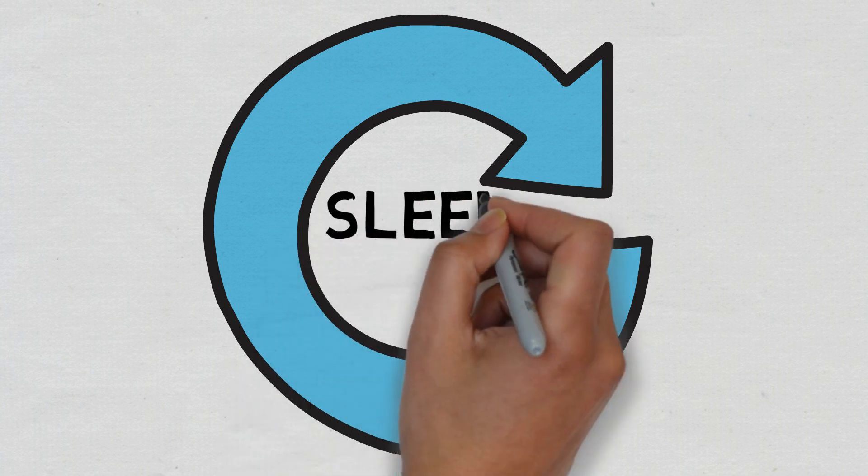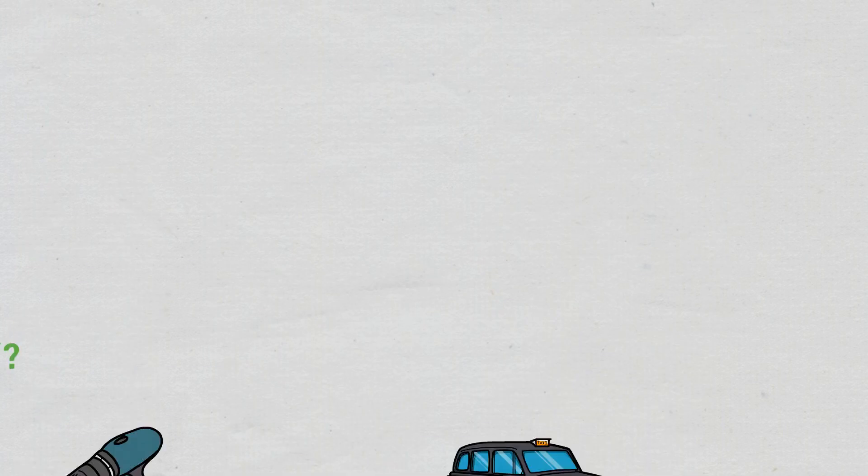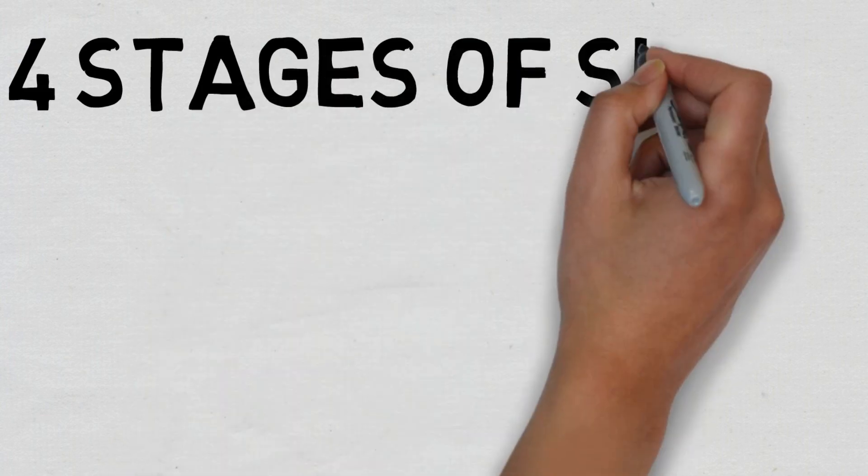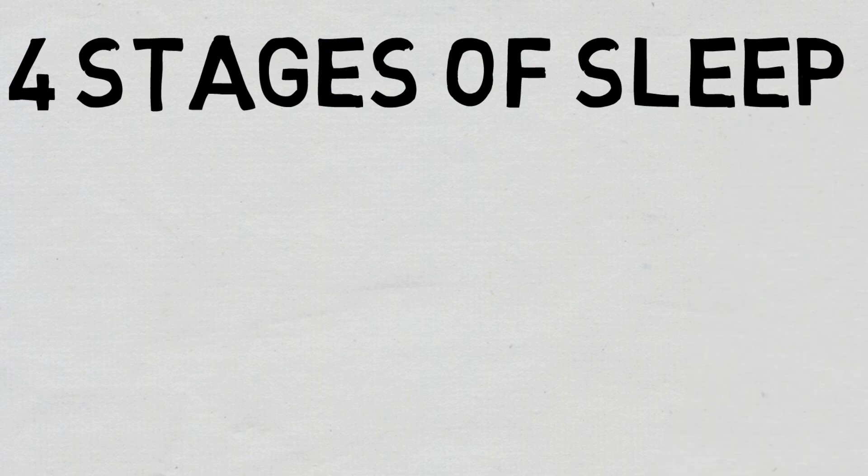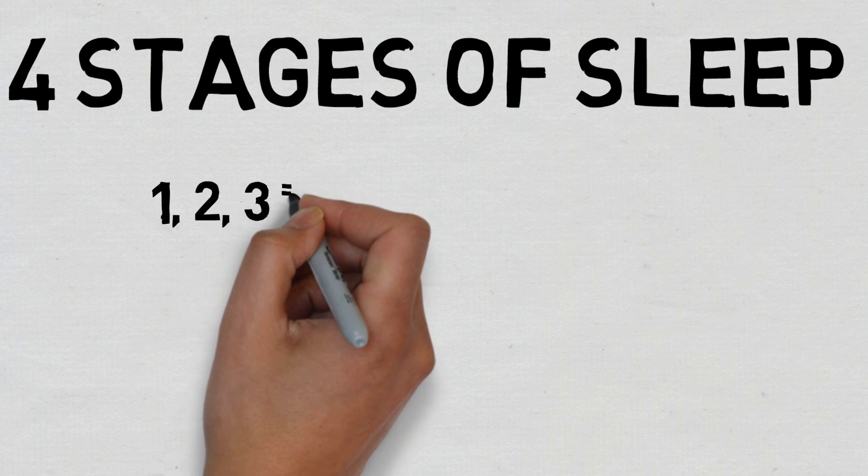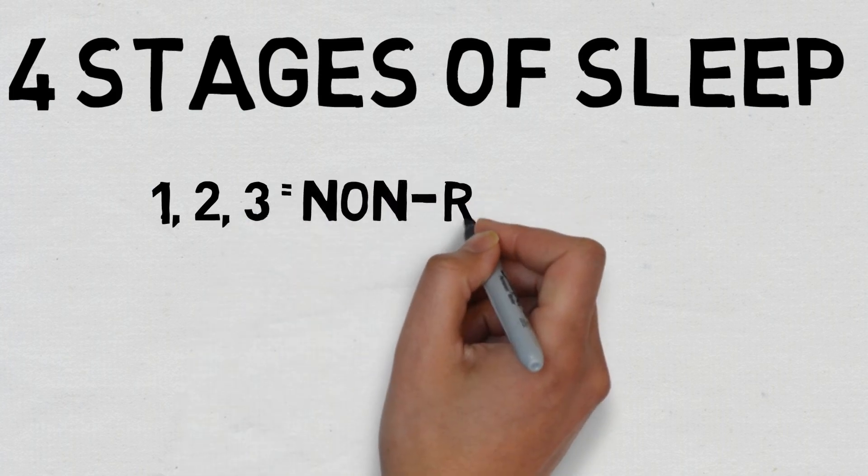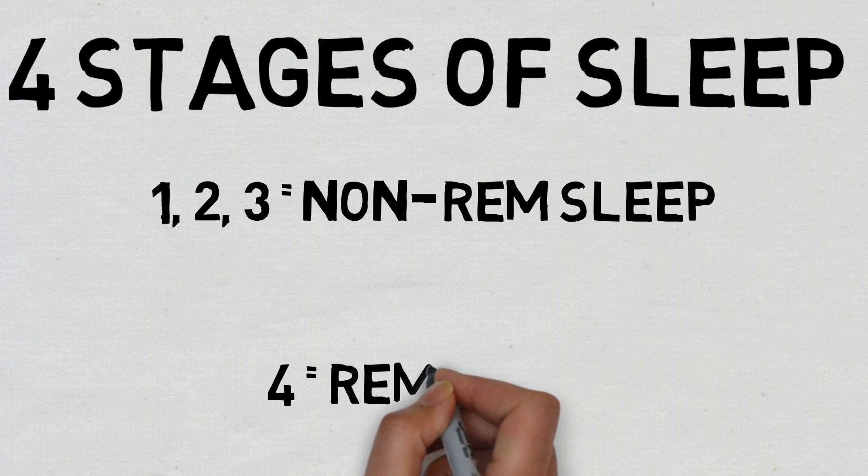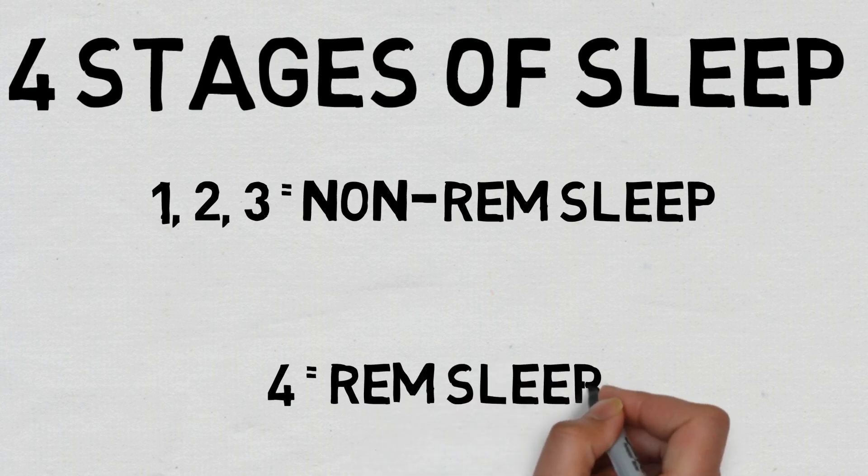Now before going into the other factors, I think it would be helpful for you to better understand the different stages of sleep because all sleep is not the same. When it comes to sleep, sleepers will pass through four stages. One, two, and three will make up non REM sleep. Stage four makes up REM sleep. REM sleep is also known as rapid eye movement sleep. So these four stages act as a cycle of length around a hundred minutes on average, moving from stage one to REM and then beginning with stage one again. And each of these stages last between five to 15 minutes.